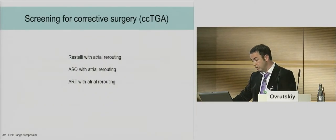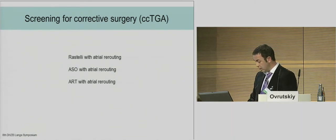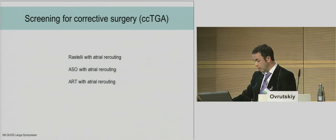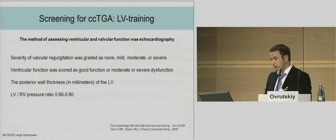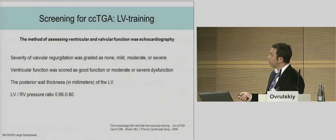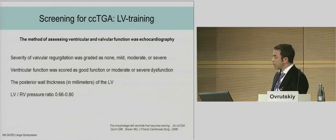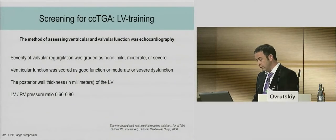Some words on congenitally corrected TGA. We need to decide which is the better surgical pathway — Dr. Hraske will present all these points. But for me it is important to say that echocardiography is extremely important in this decision-making. We look for wall thickness and the pressure ratio between the left and right ventricle to determine whether the left ventricle should be trained for the double-switch operation.